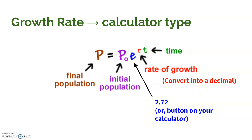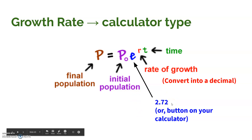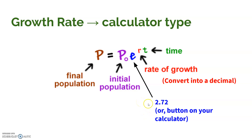This year you get to have a calculator on the AP test — they finally caught up with society. To figure out a future population, take the initial population and multiply it by E raised to the rate of growth times the time frame. E is approximately 2.72 if your calculator doesn't have it. You do not need to know why it's E. Note that you have to convert the growth rate to a decimal for this formula — unlike the rule of 70 where you keep it as a percent. Then multiply by the time frame, and that gives you the final population.